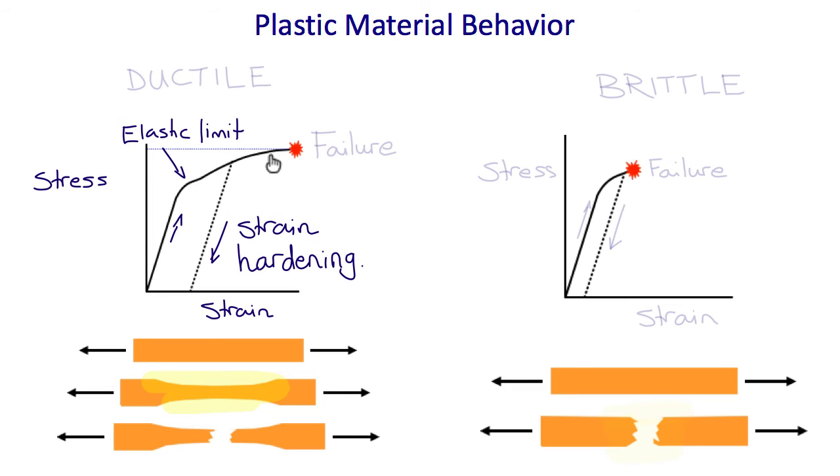On the other hand, if we keep loading, we'll ultimately reach a point known as the ultimate tensile stress and the ultimate tensile strain where we get failure. This type of failure is called ductile failure, and this type of plasticity is called a ductile plastic material. Another type of failure occurs in materials that are brittle. Soon after the elastic limit is achieved, the material fails suddenly, and this is called brittle failure, and such a material is called a brittle material.